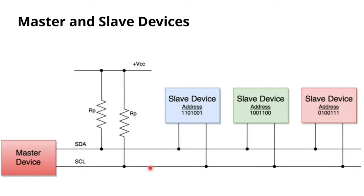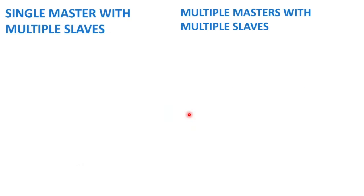In I2C communication, many devices can be connected in a single network, but only one device is communicated with at a time.